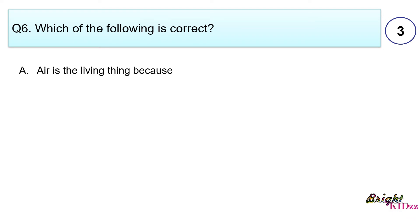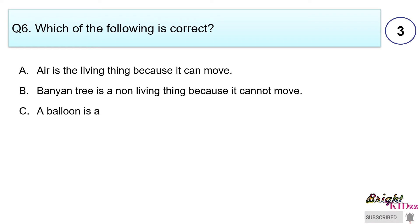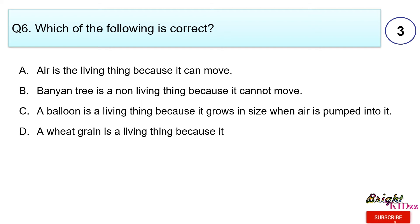Which of the following is correct? Air is a living thing because it can move. Banyan tree is a non-living thing because it cannot move. A balloon is a living thing because it grows in size when air is pumped into it. A wheat grain is a living thing because it can grow into a new plant. Answer D. A wheat grain is a living thing because it can grow into a new plant. Rest all are wrong.